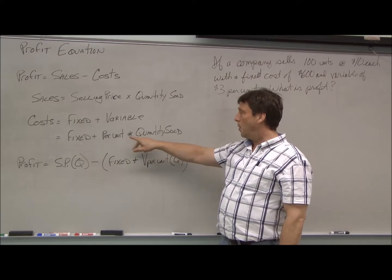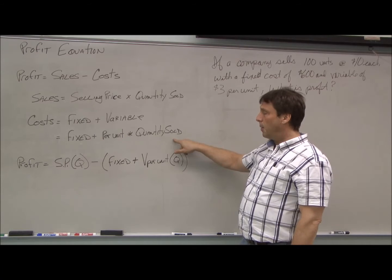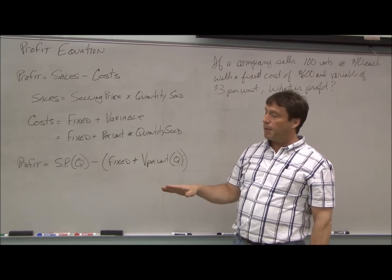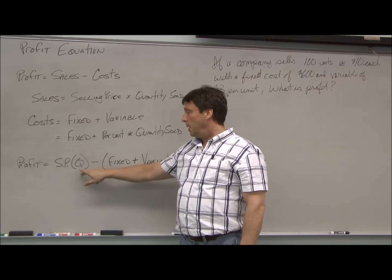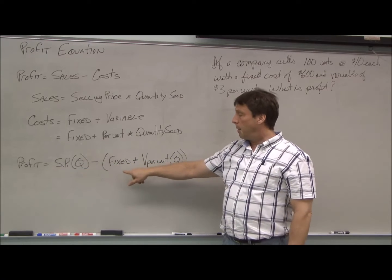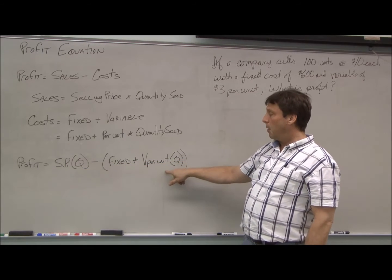And that's a per unit charge times the quantity sold. So we can rewrite the profit equation as selling price times quantity minus the sum of our fixed costs and our variable costs.